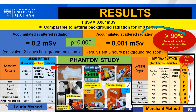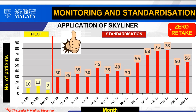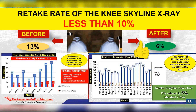Based on our phantom study conducted, it was found that the Merchant method using Skyliner reduces radiation dose. Our team continuously monitored the application of Skyliner. The Skyliner documented zero retakes, and the retake rate of skyline view was reduced up to 6% with increased aesthetic value.